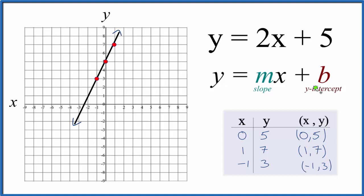The b here, b is the y-intercept so we're going to cross the y-axis and that's 5. So we go to the y-axis and we find 5 right here.